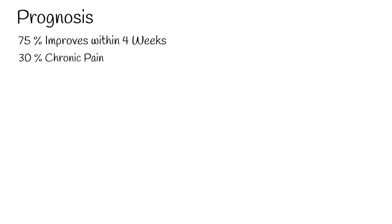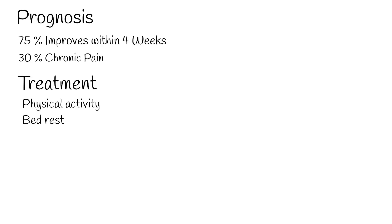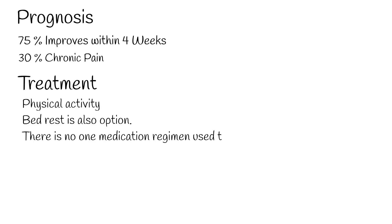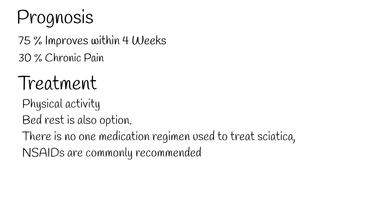Initially, treatment in the first 6 to 8 weeks should be conservative. More than 75% of sciatica cases are managed without surgery. Physical activity is often recommended for conservative management in persons who are physically able. However, according to some research, bed rest is also a treatment option. There is no single medication regimen, but NSAIDs are commonly recommended as a first-line treatment.